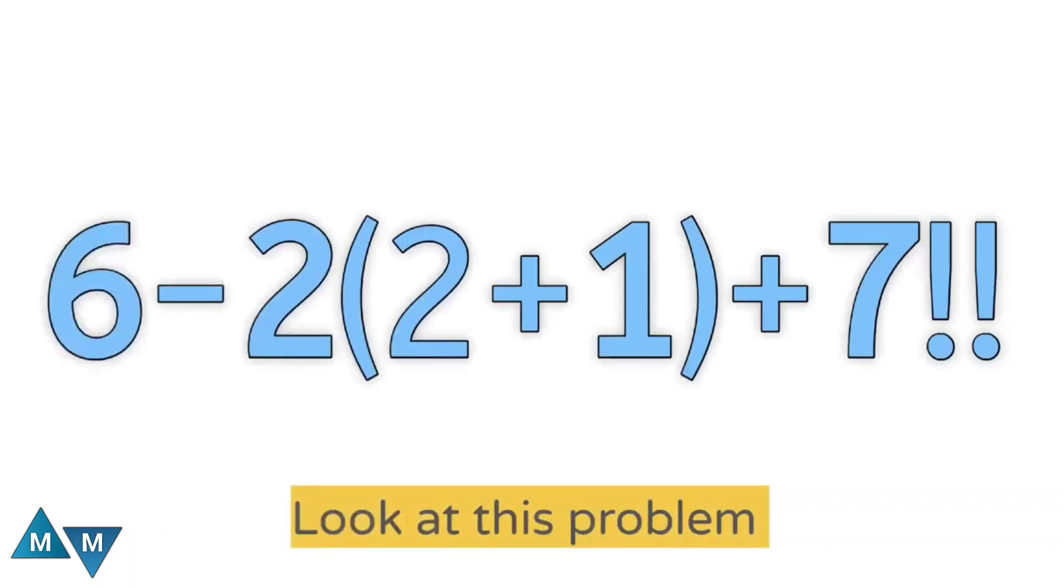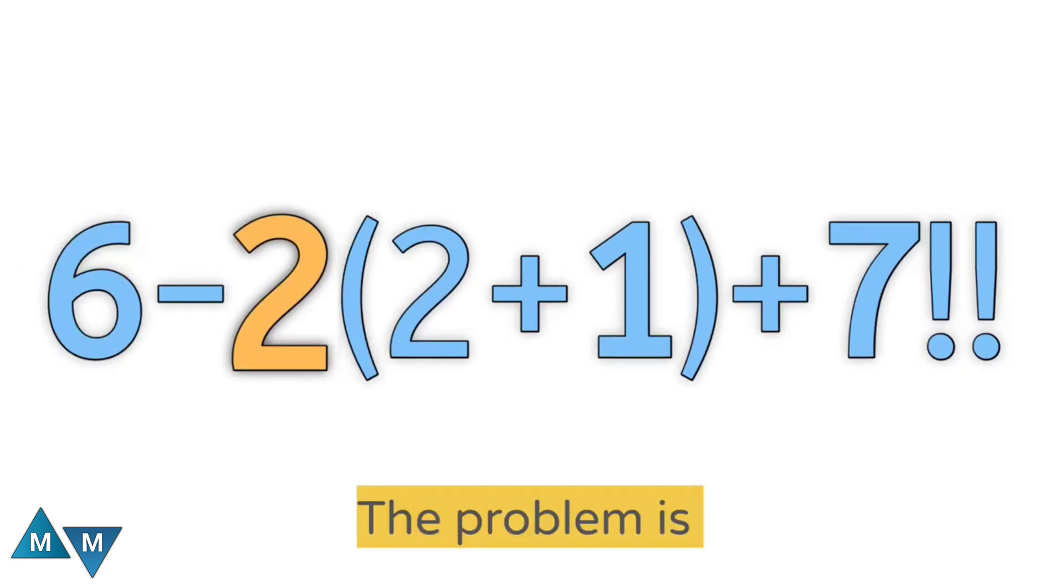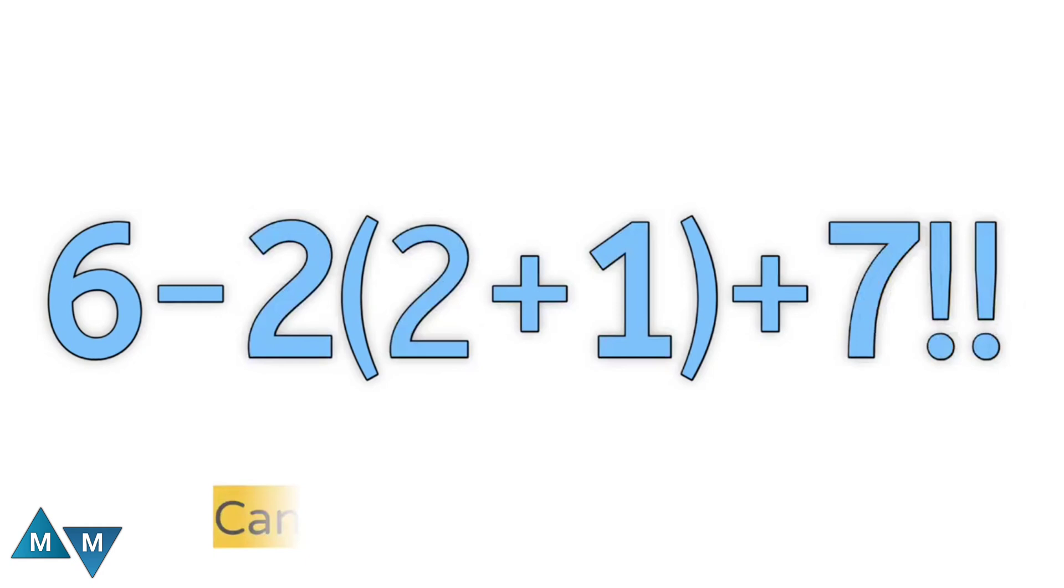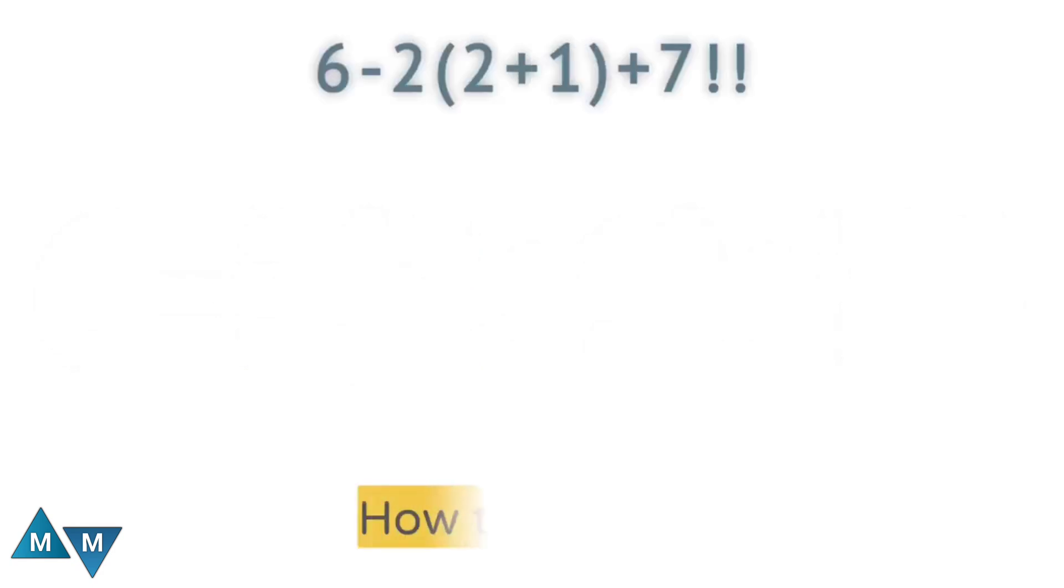Look at this problem. The problem is 6 minus 2 times parentheses 2 plus 1 plus 7 double factorial. Can you solve this problem? Let's see step by step how to solve it.